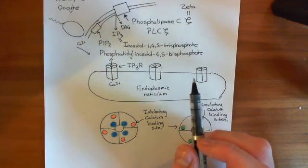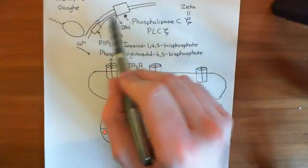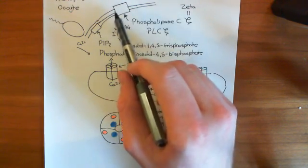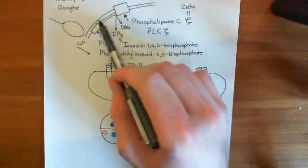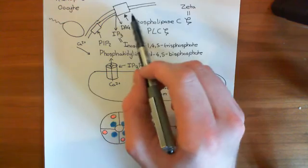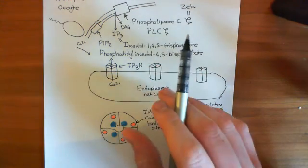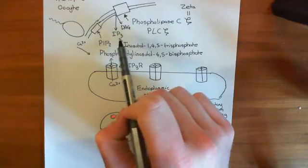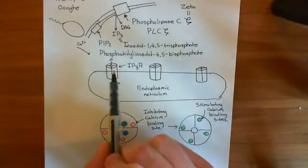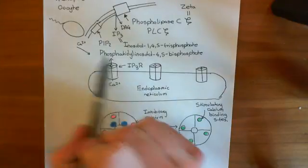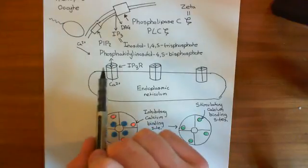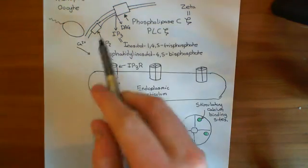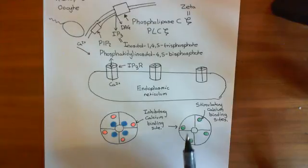I want to stress a point I didn't emphasize enough in the previous video. When the sperm puts phospholipase C into the membrane of the oocyte, this phospholipase C is free to diffuse in the membrane and can spread all over the oocyte membrane. Therefore, you get a whole cytoplasmic increase in IP3 in the oocyte, which is why it's not just the IP3 receptors nearby where the sperm first touched that have IP3 bound to them — all the IP3 receptors have IP3 bound because IP3 rises throughout the entire cytoplasm.